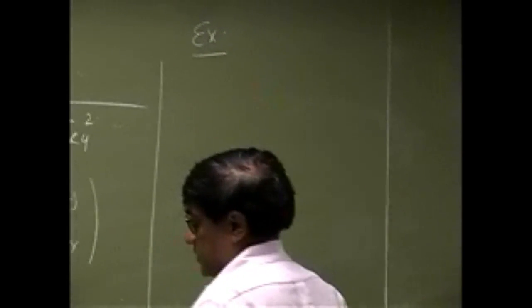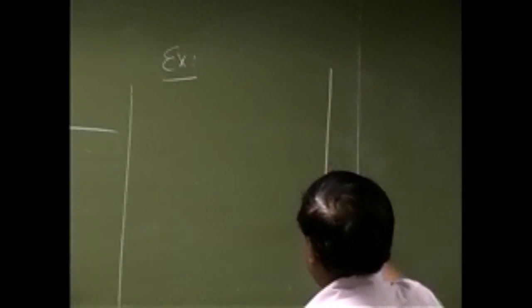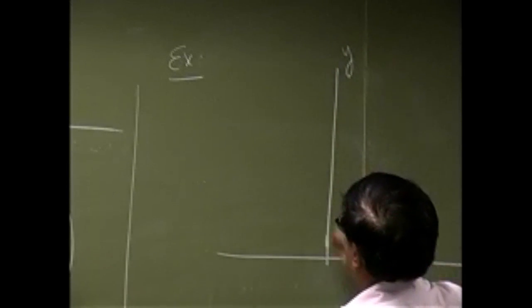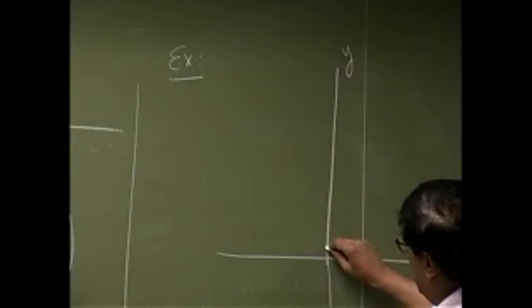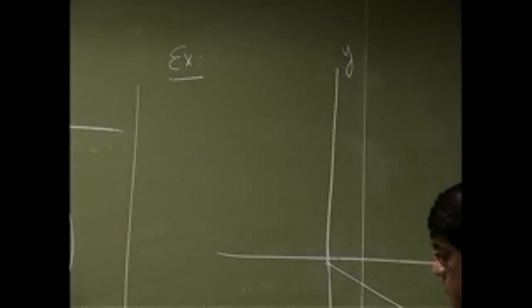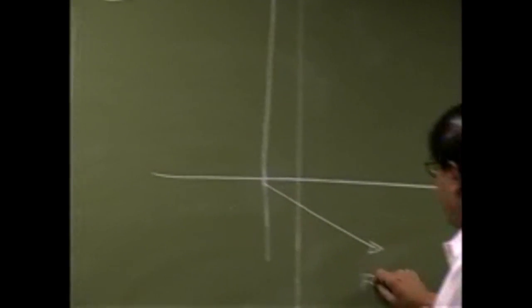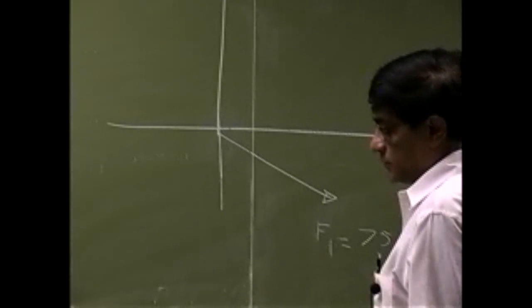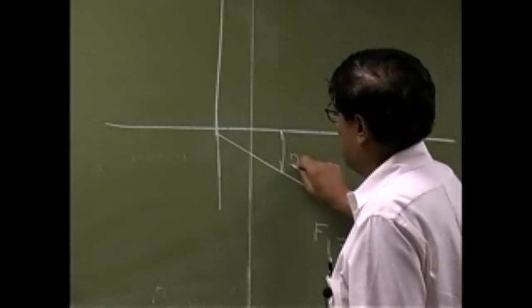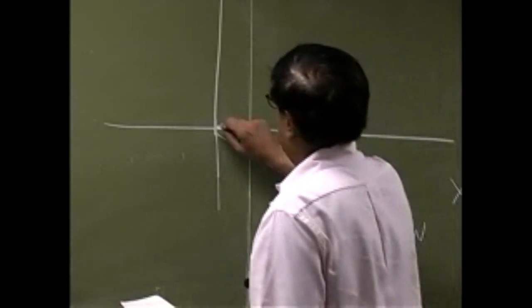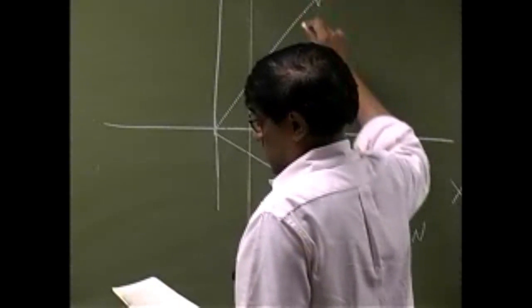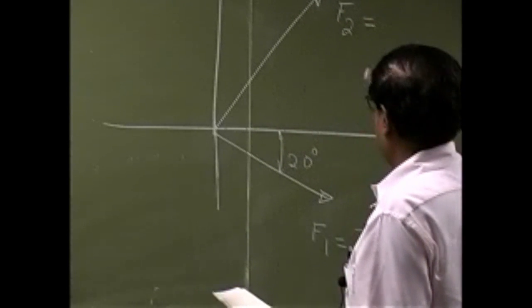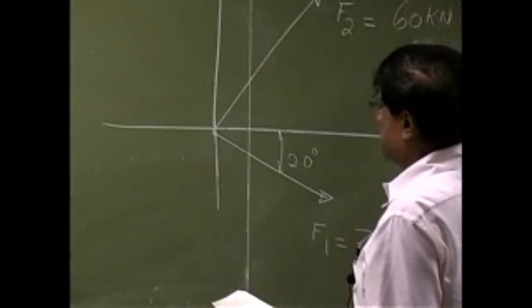For adding forces, let's say we get something like this. We have X and Y axes. Then you have a force here — that's F1 with the magnitude of 75 newtons, and it makes an angle of 20 degrees. Then you have another force, and that's F2, and the magnitude for that is 60 newtons.